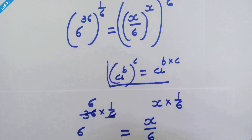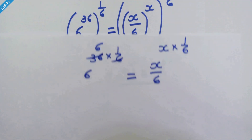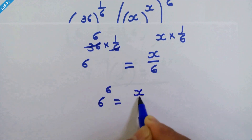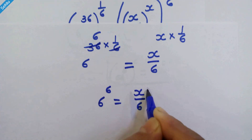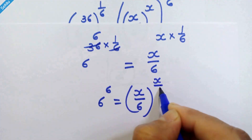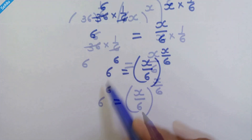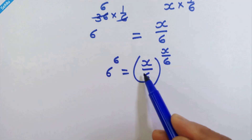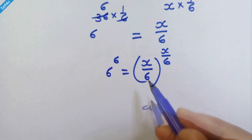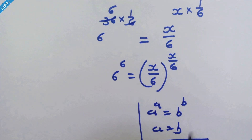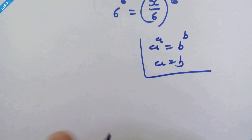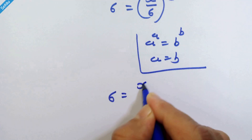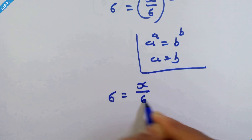6 times 6 are 36. So we can write 6 raised to 6 is equal to x upon 6, whole raised to x upon 6. Now this equation has the same base and exponent on both sides, so by using this rule we can equate 6 is equal to x upon 6.